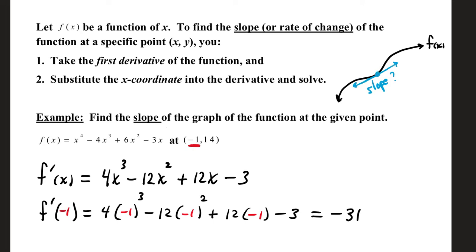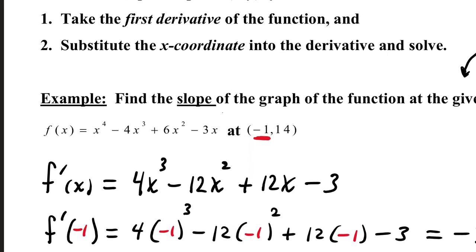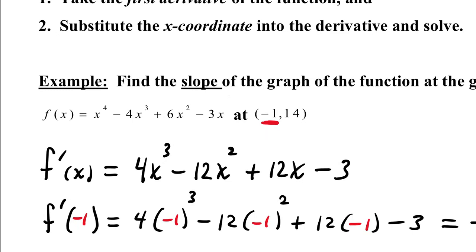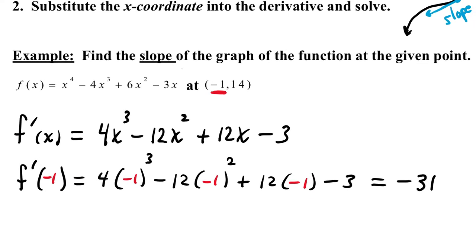In order to do that, we take f of x equal to x to the fourth minus 4x cubed plus 6x squared minus 3x, and we're going to investigate the rate of change specifically at this point. Taking our first derivative using power rule, we have 4x cubed minus 12x squared plus 12x minus 3. Substituting negative 1 in for all of the x's in the first derivative, we find that that is negative 31. That is the slope of the graph of this function at this point.